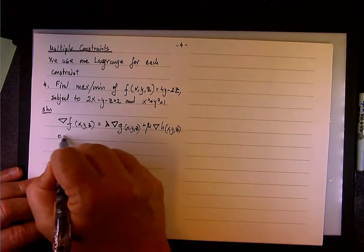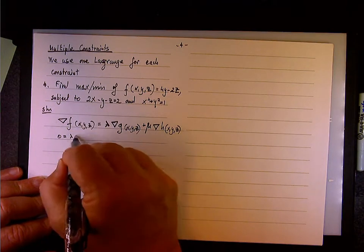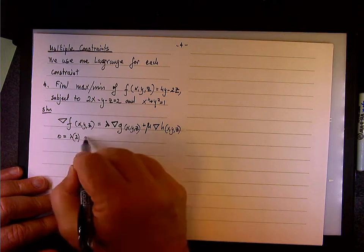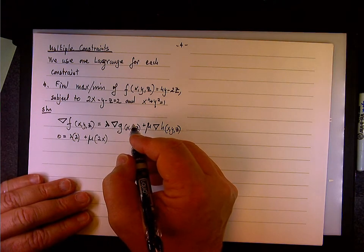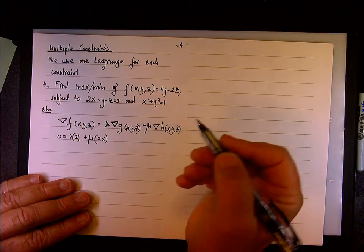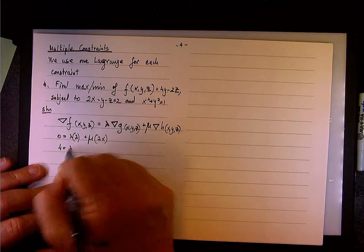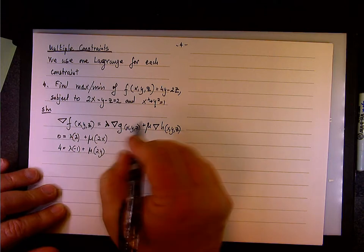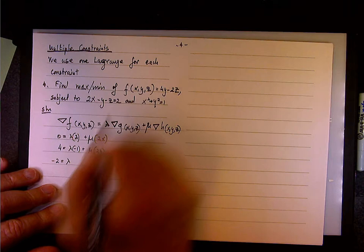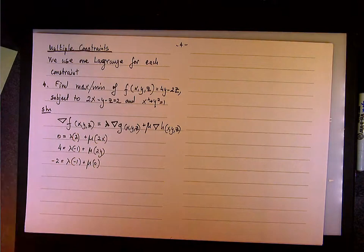Let's set it up and take the derivative with respect to x equals 0: lambda times 2 plus mu times 2x. The derivative of f with respect to y is 4, equals lambda times negative 1 plus mu times 2y. And the partial of f with respect to z is negative 2, equals lambda times negative 1 plus mu times 0.